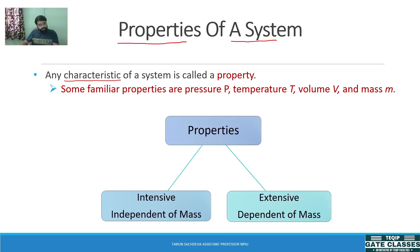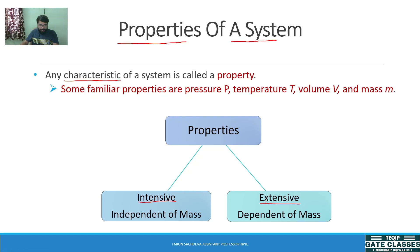Further, properties are divided into two parts: intensive property and extensive property. Intensive properties are those which are independent of mass. Extensive properties depend on mass. A simple trick to remember: 'IN' gives us intensive and independent; the remaining, extensive, is dependent.